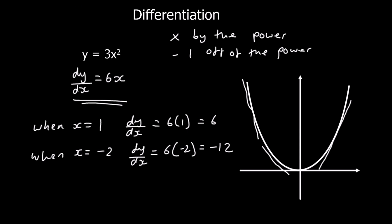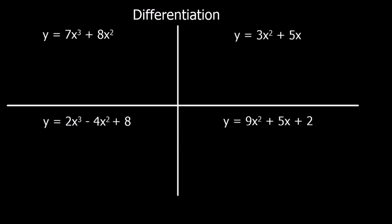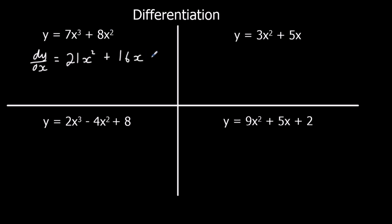So this is differentiation. Let's have a look at some examples. We've got four different curves and we're going to work out the gradient function dy/dx for each. Following the process — times by the power, take one off the power. So 3 times 7 is 21, and 3 minus 1 is 2. Then 2 times 8 is 16, and take one off the power, which is x to the power of 1. We don't need to write the 1.